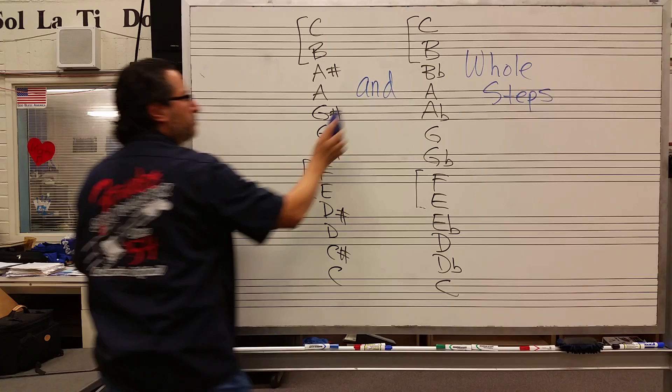In this lesson, we talked about the chromatic scale, and we said that you should memorize the chromatic scale up and down. Now we're going to talk about half steps and whole steps.